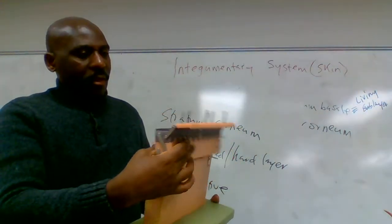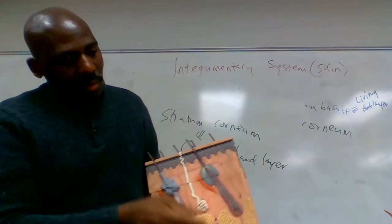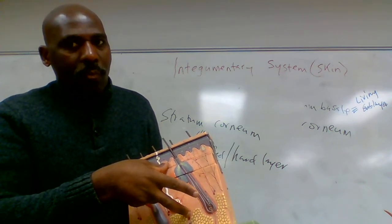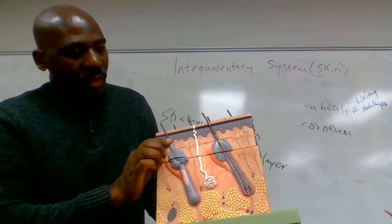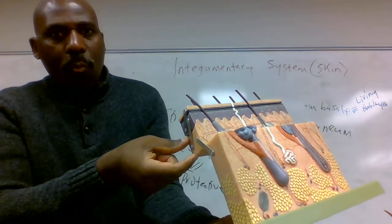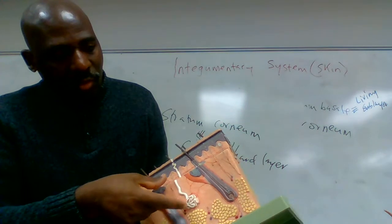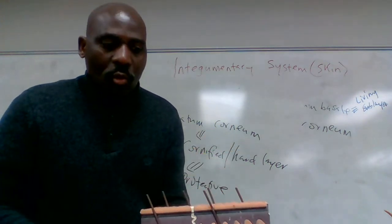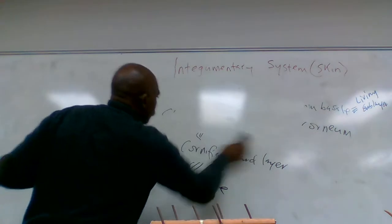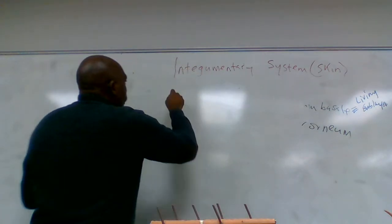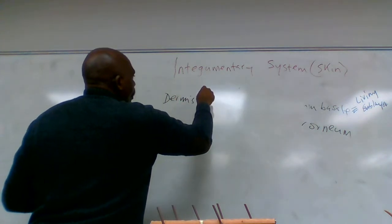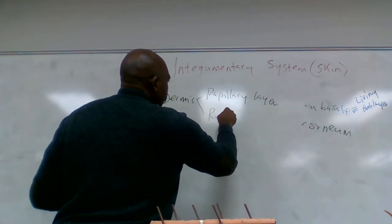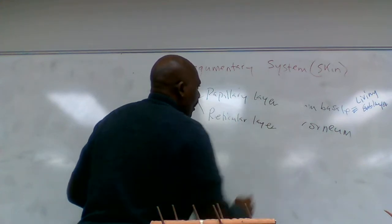In this model, all of the pinkish portion is the dermis. The dermis is subdivided into two sub-layers: an upper sub-layer and a lower sub-layer. The upper sub-layer is called the papillary layer and the lower sub-layer is called the reticular layer.